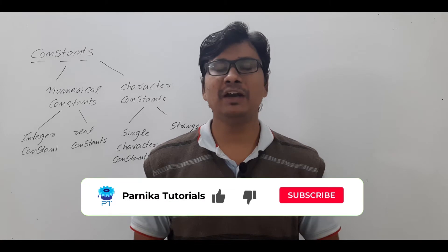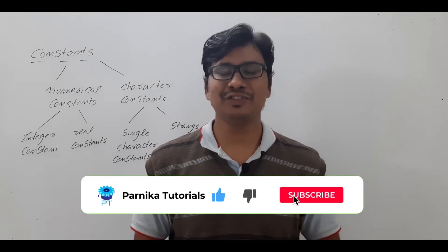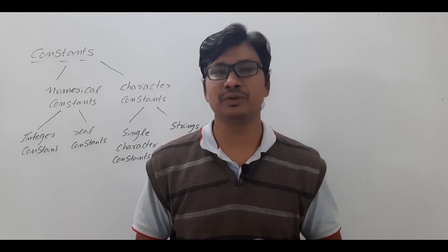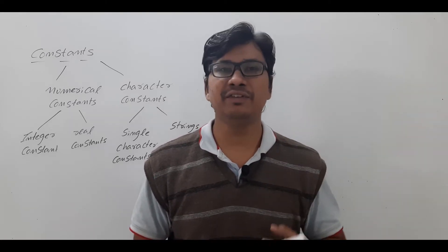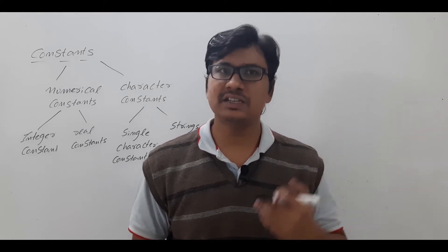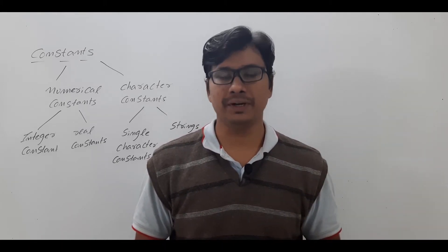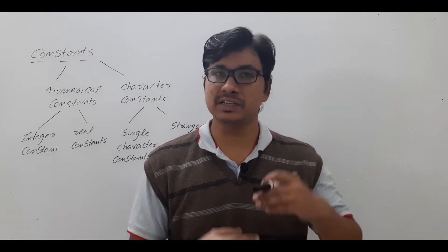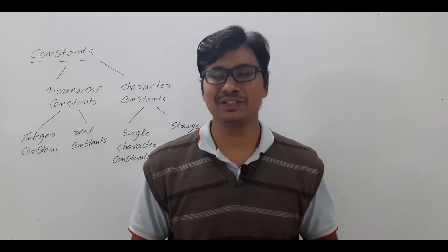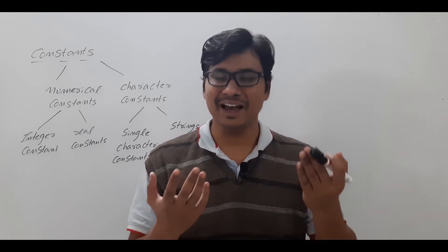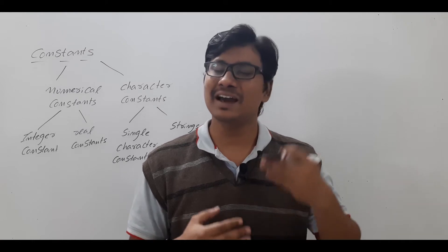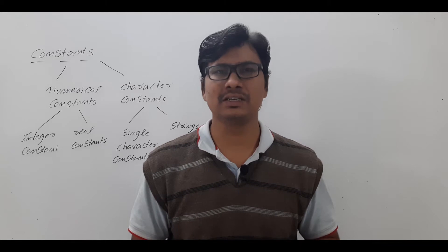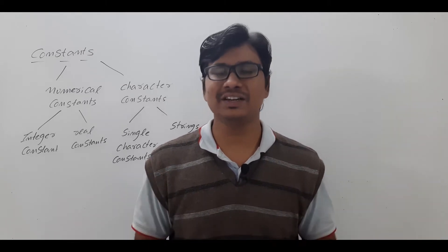Good morning friends, welcome back to Pannika's tutorials. In the last few videos I discussed about what is a token and the six different types of tokens: keywords, identifiers, constants, strings, special symbols, and operators. In the last video I discussed about keywords and identifiers in detail. If you have not watched those videos, please go back and watch them before continuing. In this video I want to discuss about constants in detail.